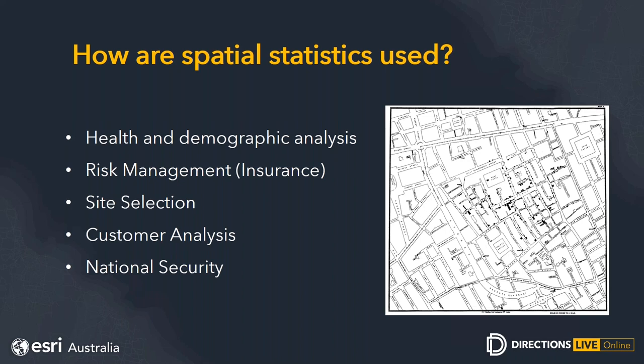We also have clients in risk management, insurance, and banking — finding data sets and understanding the unknown portions of their risk data. There are classic examples of site selection, such as food deserts and where to put supermarkets, or customer analysis like distance drop-off for commuting — how far are people willing to travel to access a service. And then there are national security case studies, such as population movements for a grand final and how to incorporate that into business workflows.